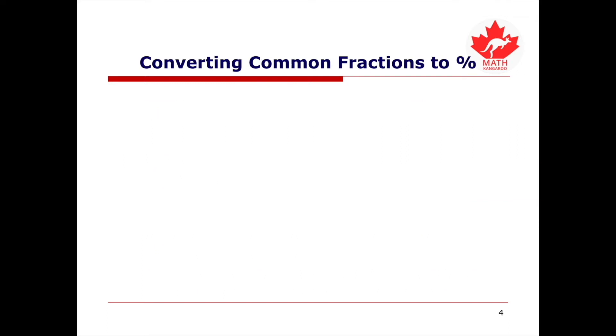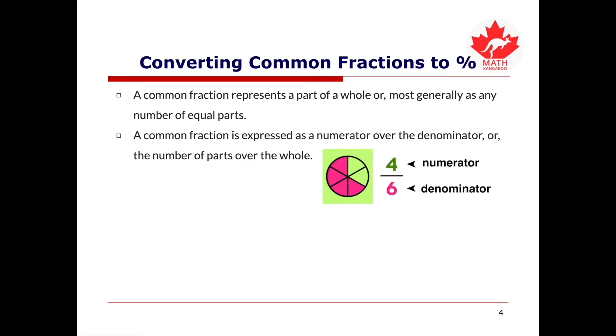How do we convert common fractions to percent? A common fraction represents a part of a whole, or most generally, as any number of equal parts. A common fraction is expressed as a numerator over the denominator, or the number of parts over the whole. To convert a common fraction into a percent, we simply rewrite the fraction with a denominator of 100, since percent means parts per 100.